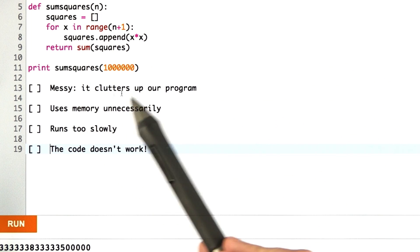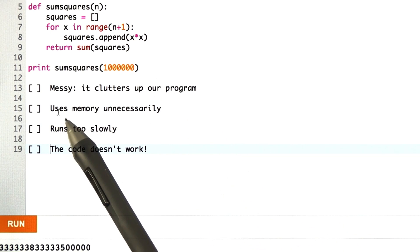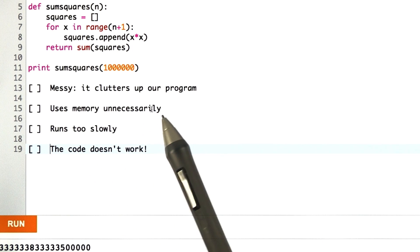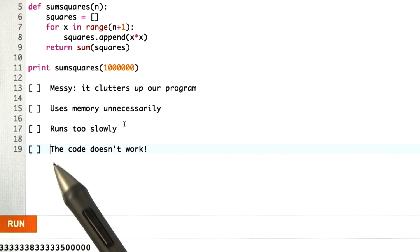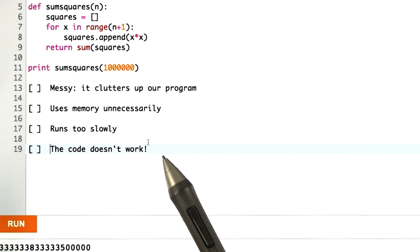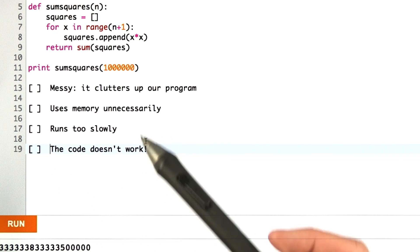Do you think it's messy and it unnecessarily clutters up the program? Do you think it uses memory when it doesn't really have to? Do you think it runs too slowly? Or do you think the code doesn't work? And you may have several problems with this, so it's somewhat subjective. Just choose whatever you think is the biggest problem.